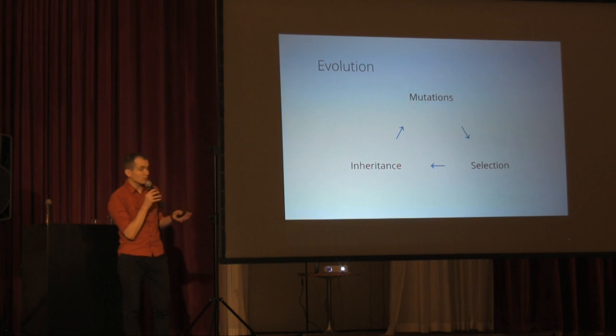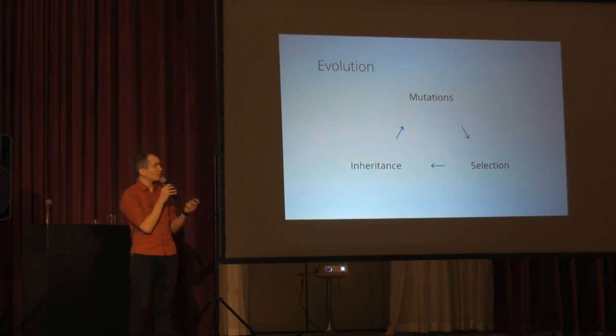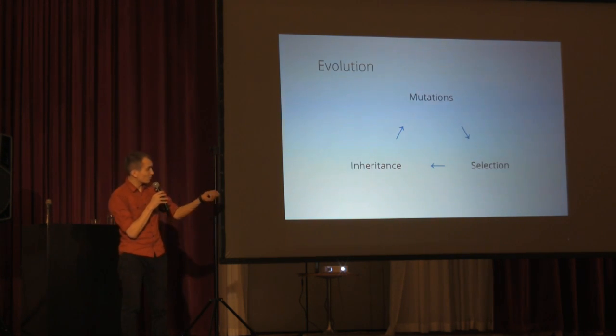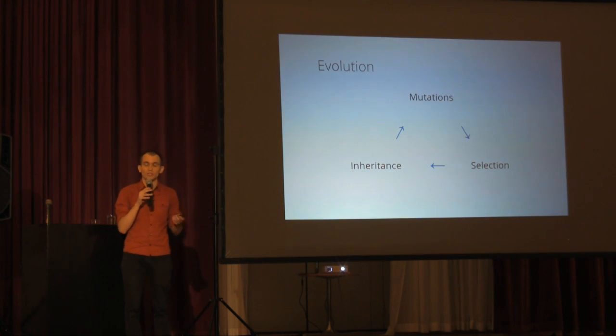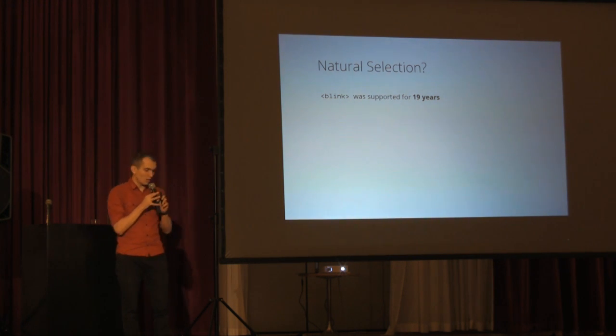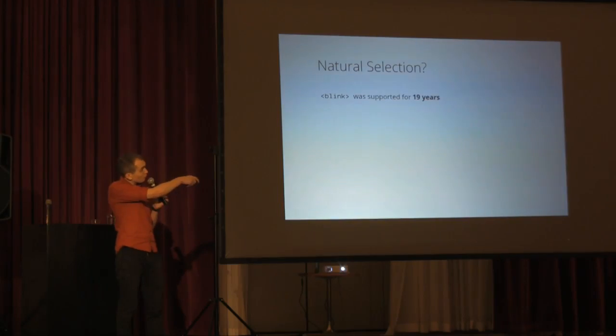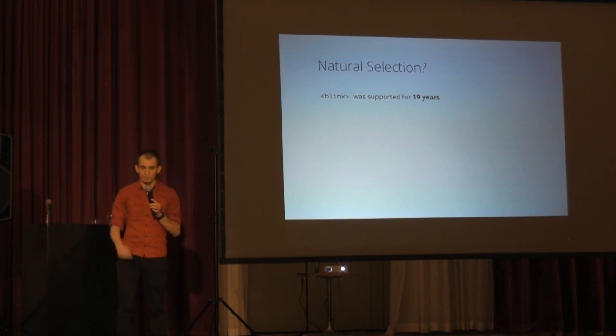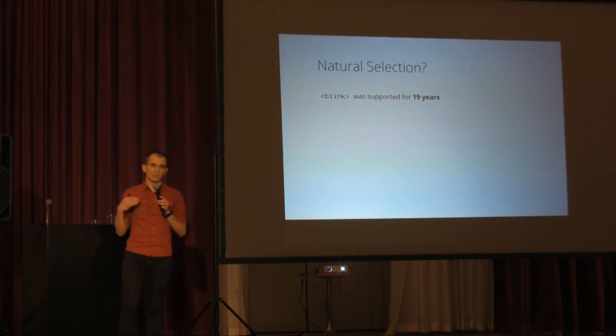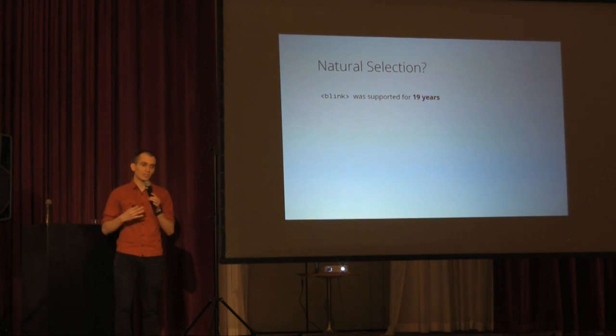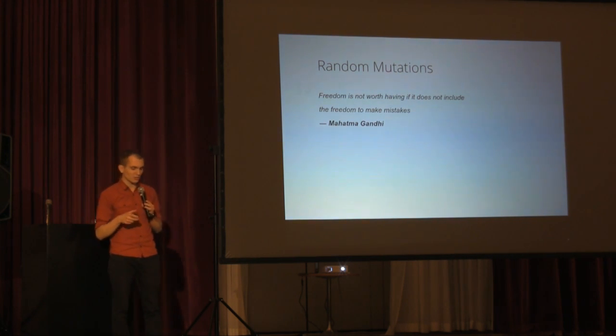Does the web use these three steps? Does W3C use these steps in generating new specifications? I think W3C doesn't. Of course, we have a lot of inheritance — we have many legacy code and many old outdated specifications. But do we have natural selection? The blink tag is a good example. The blink tag was never part of any specification — it was just a vendor-specific tag for Firefox only. But Mozilla was forced to support it for 19 years. If we need 19 years to remove a tag with no specification, how many years will we need to remove a bad specification with mistakes?